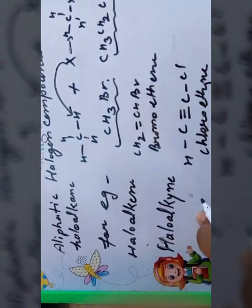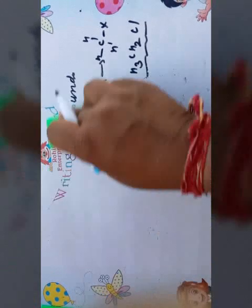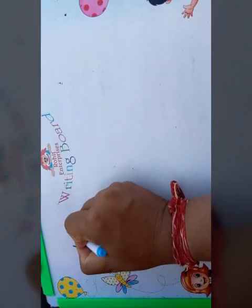Next one: haloalkyne. This is a triple-bonded compound — for example, HC≡C–Cl, chloroethyne. So, aliphatic halogen compounds: haloalkanes have single-bonded carbon atoms, haloalkenes have double-bonded carbon atoms, and haloalkynes have triple-bonded carbon atoms.